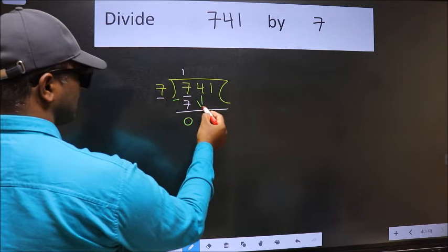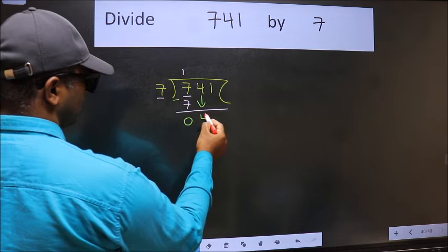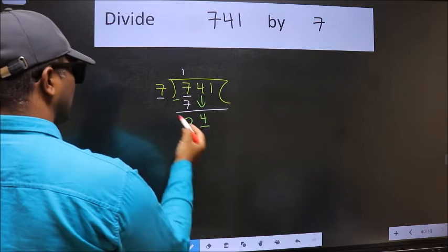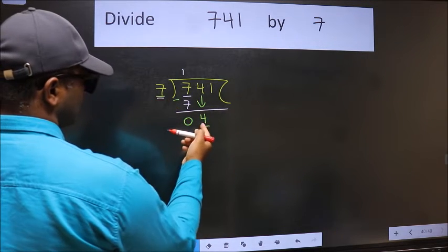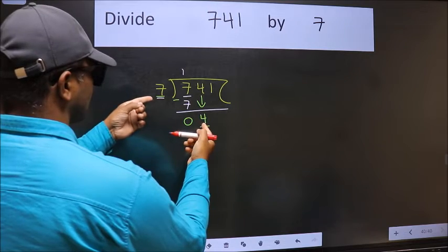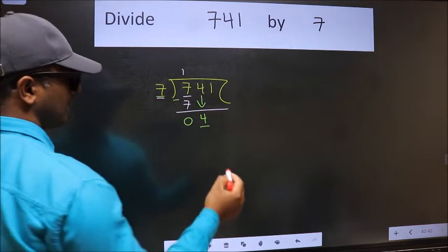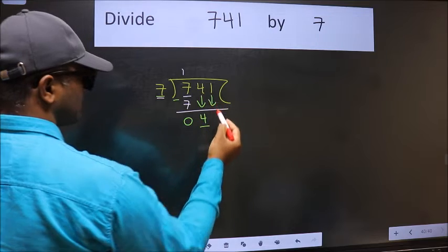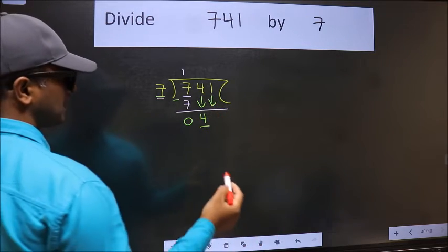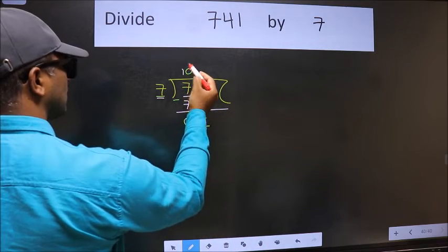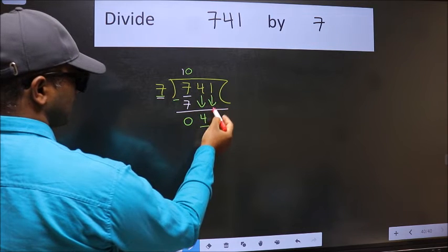After this, bring down the beside number. So 4 down. Now here we have 4 and here 7. 4 is smaller than 7, so we should bring down the second number. And the rule to bring down second number is we should put 0 here. Then only we can bring this number down.